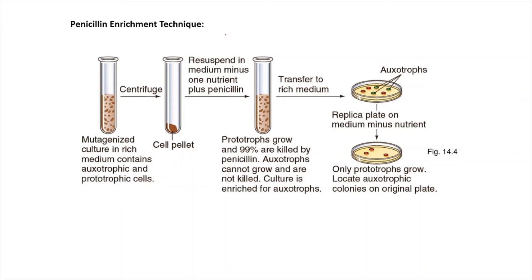Today we are going to discuss the penicillin enrichment technique. This technique is performed for the selection of auxotrophic mutants. The purpose of performing this test is for the selection of auxotrophic mutants.